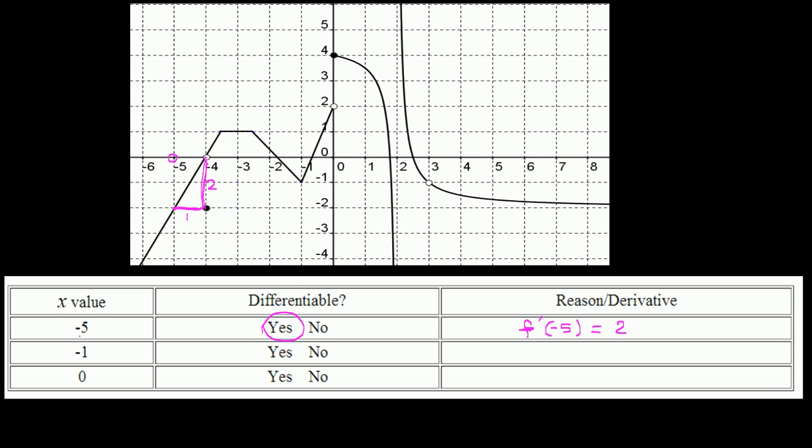Second, x equals negative 1. Negative 1 is here and the corresponding point on the curve is a corner point. As we know, a function is not differentiable at a corner point.